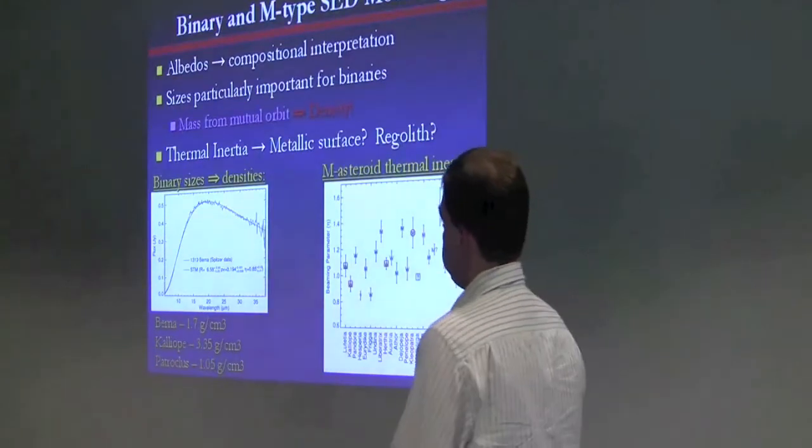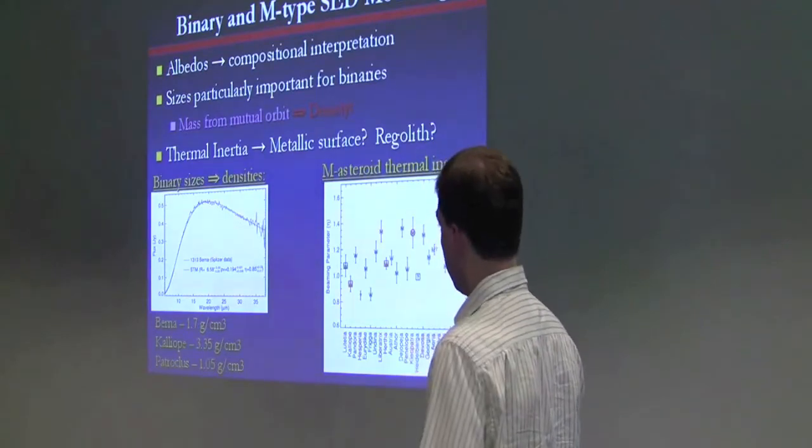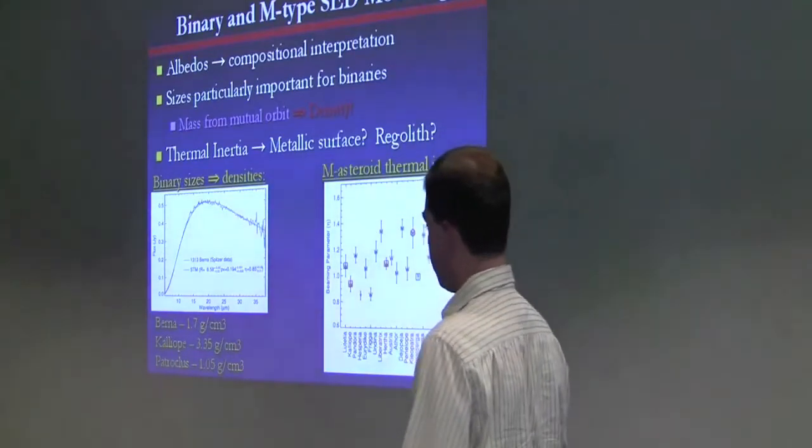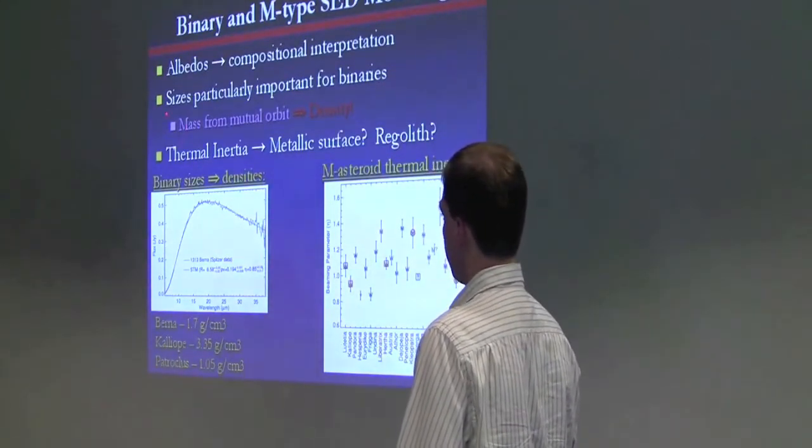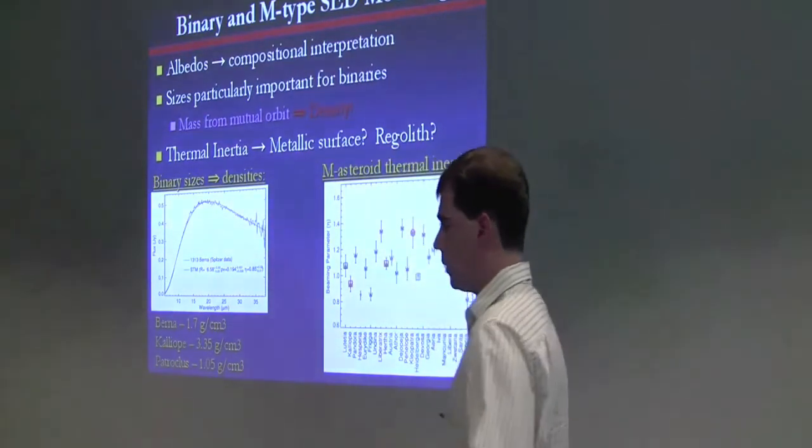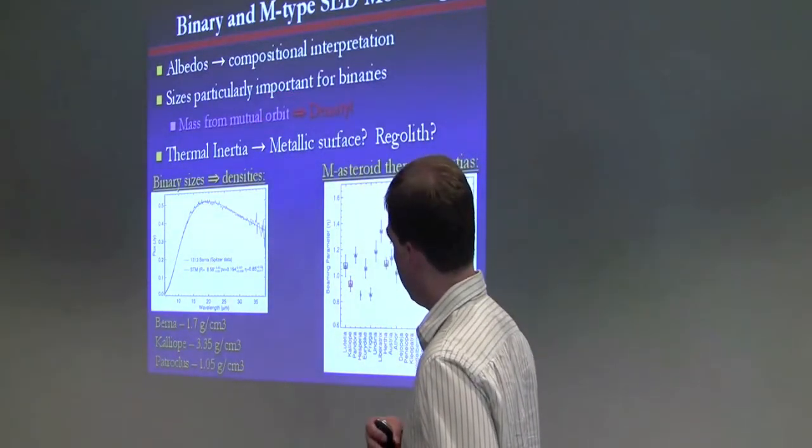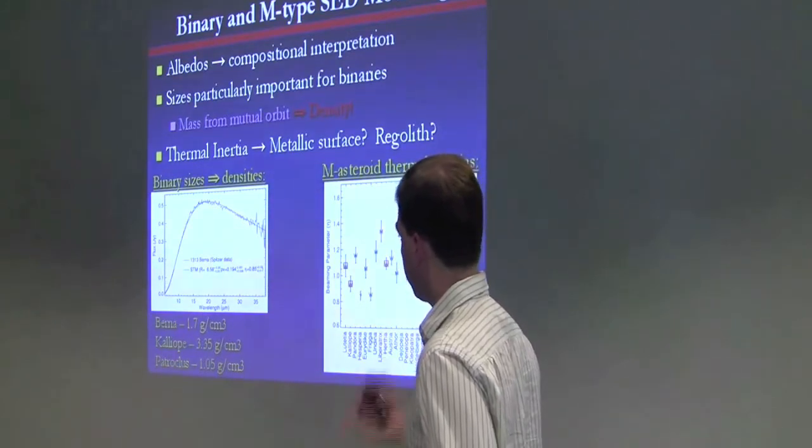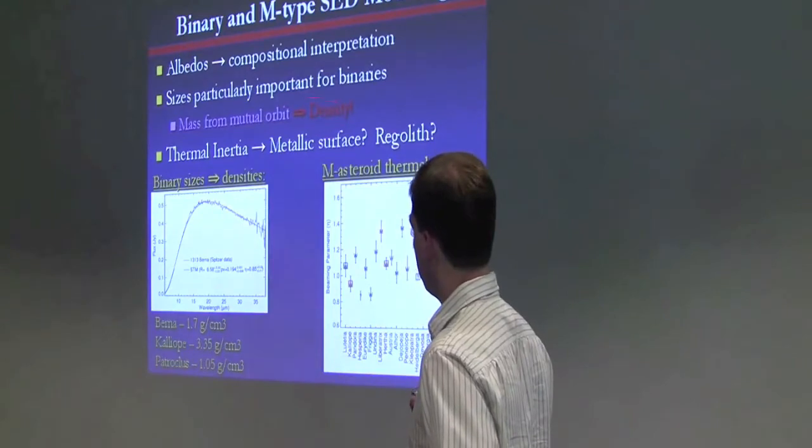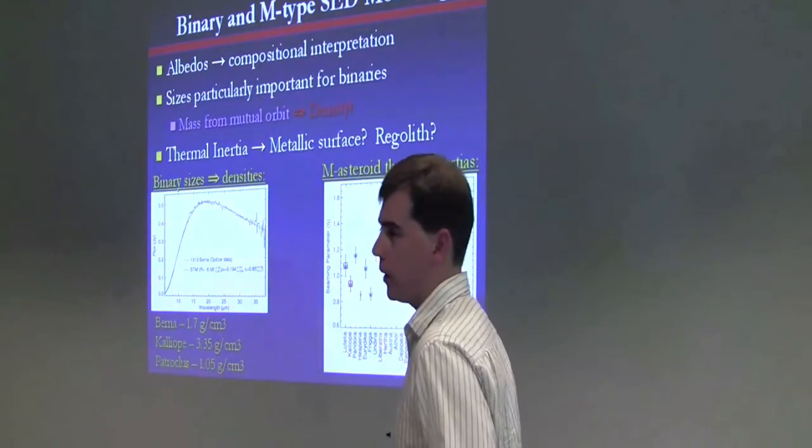Calculating albedos are important for, provide an important constraint on compositional interpretations. It's important to know whether an asteroid is dark or bright for understanding its composition. Sizes also are particularly important on an individual basis for objects. We like to know how big they are, but they can be particularly important for binaries, in which the mass can be derived from mutual orbits of the two objects. And if you get the size, then that provides a density, which tells us a lot about the interior structure of the object, the composition.